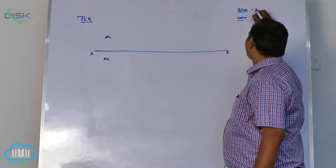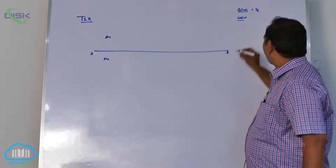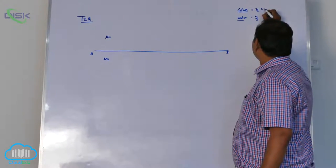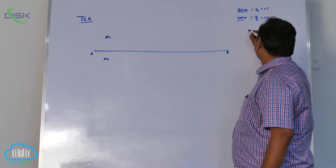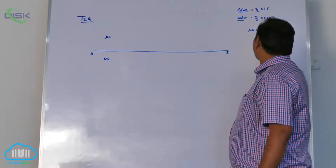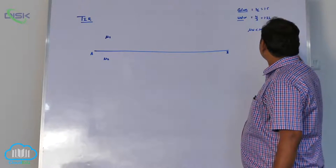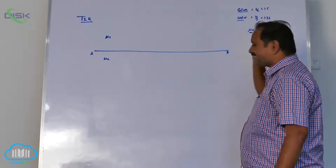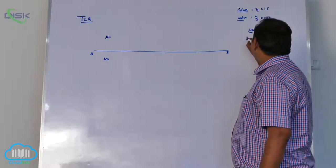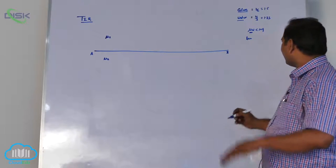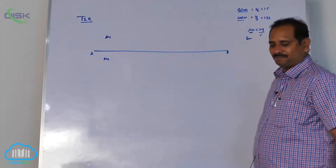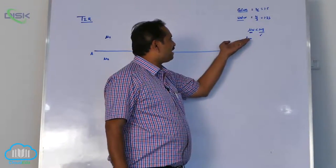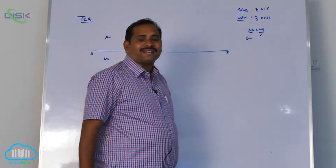The refractive index of glass is 3/2 (1.5) and of water is 4/3 (1.33). Mu of water is less than mu of glass. The medium with lesser refractive index acts as the rarer medium. So comparing two material mediums, glass acts as the denser medium and water acts as the rarer medium.